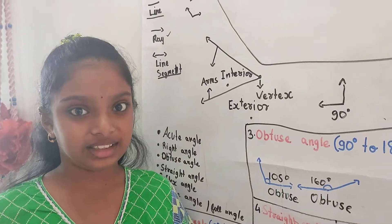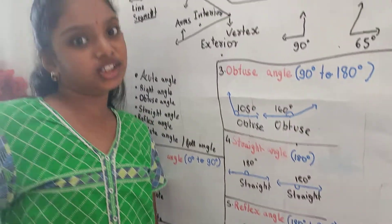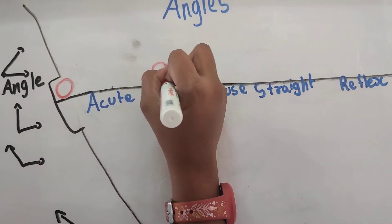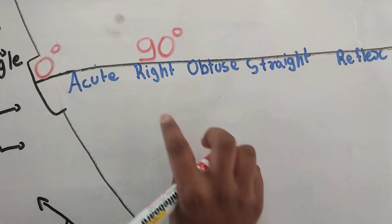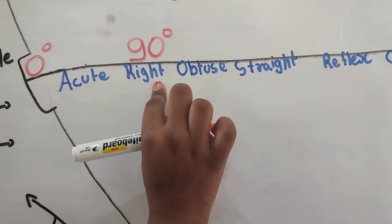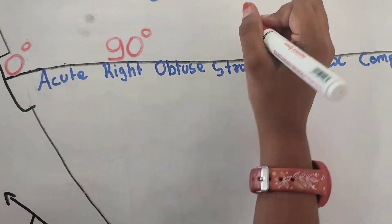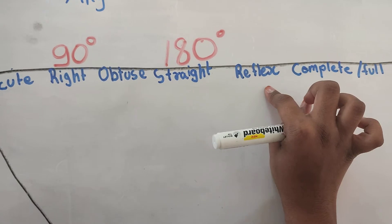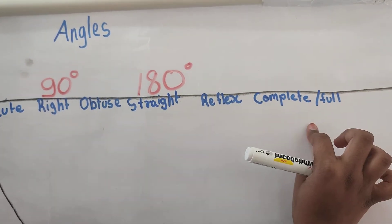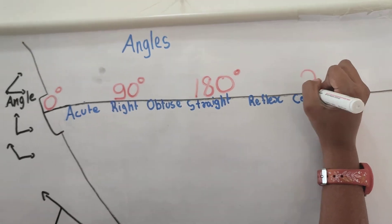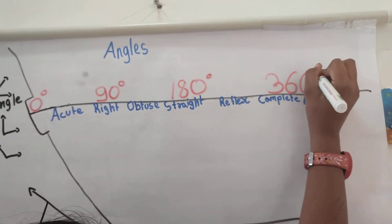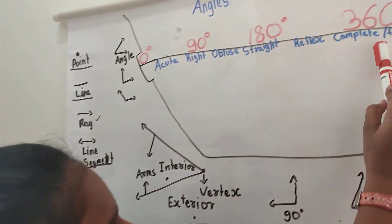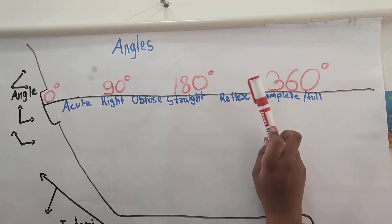Now, let us revise all these angles once more. Acute angle is between 0 to 90 degrees. Right angle is 90 degrees. Obtuse angle is between 90 degrees and 180 degrees. The reflex angle is between 180 degrees and 360 degrees. The complete angle is the angle which has 360 degrees.